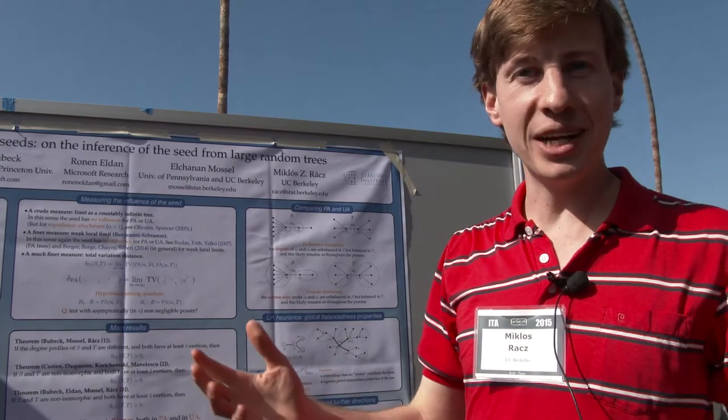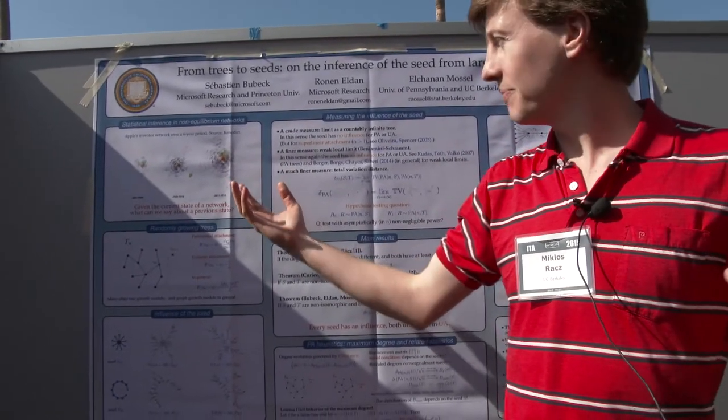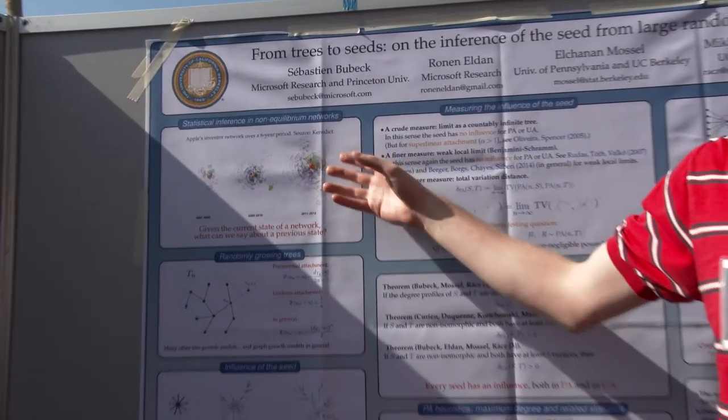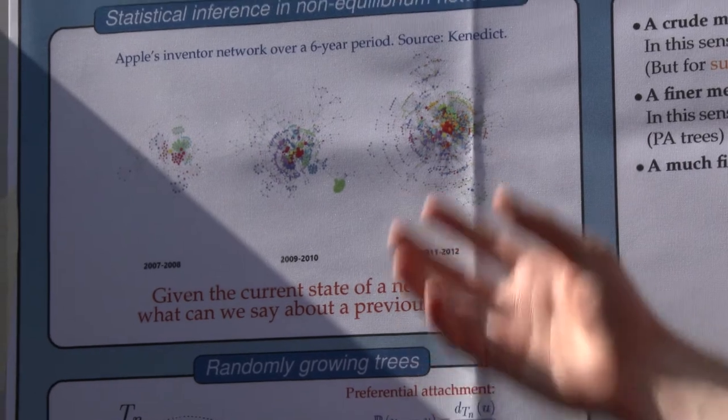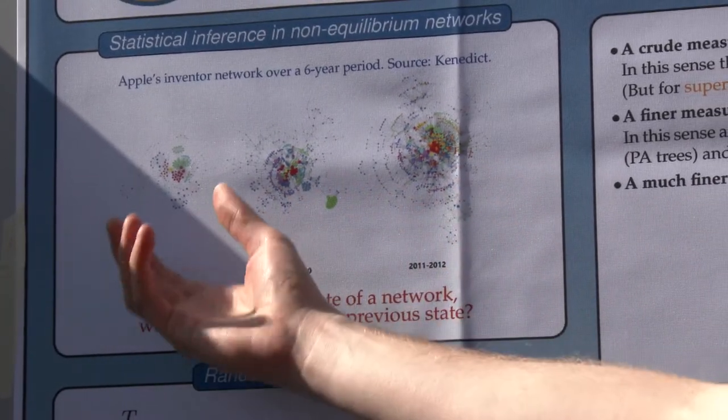So the basic question we're trying to understand is if you have some kind of randomly growing graph and you look at it at some large time, what can you say about it far back in time? What can you say about, for instance, where it came from?